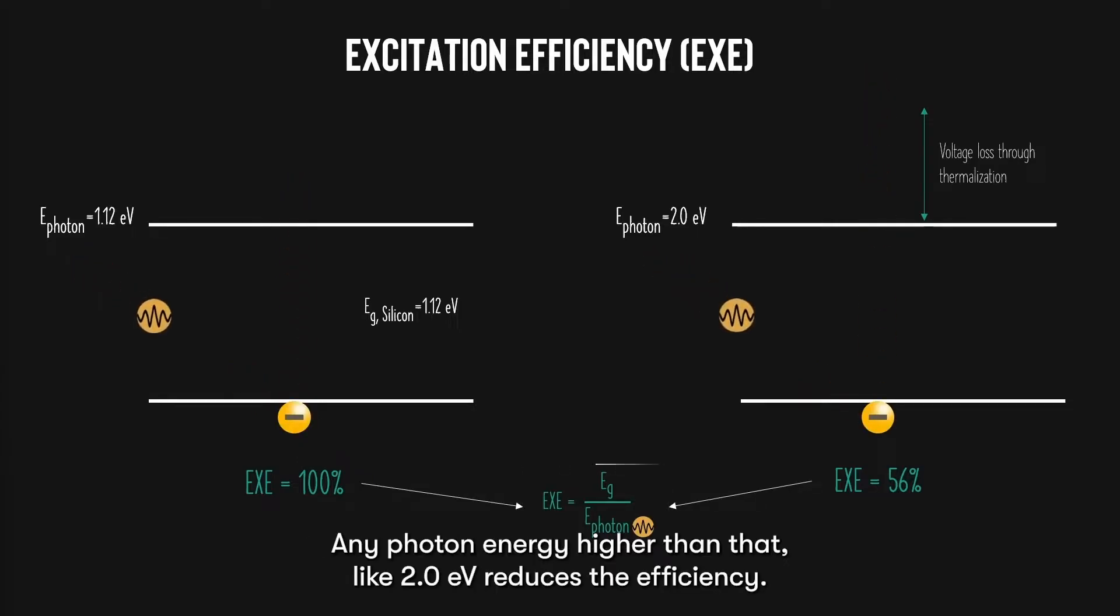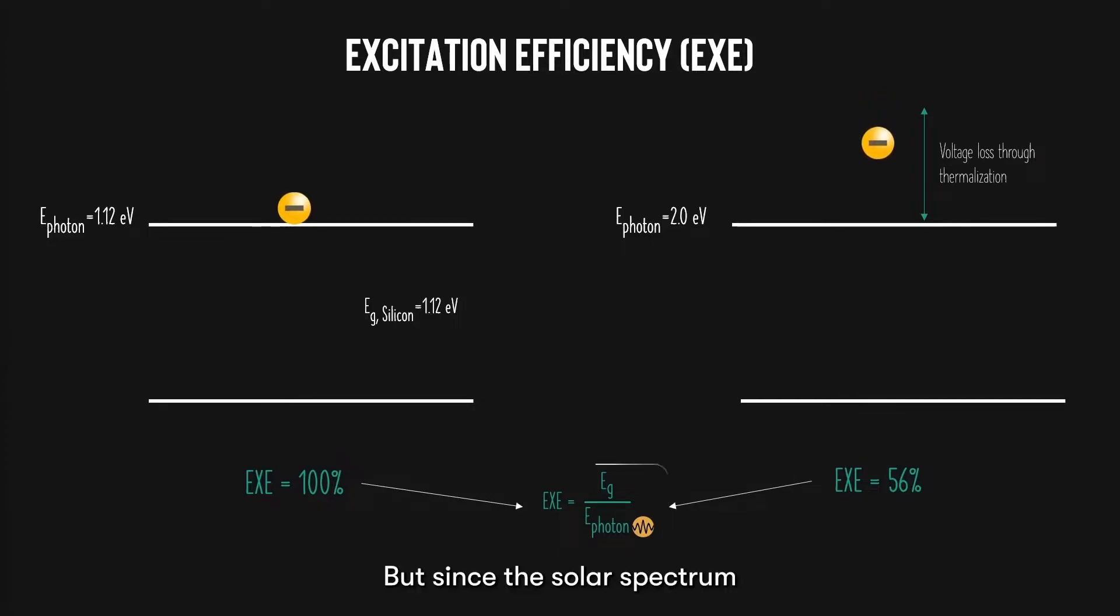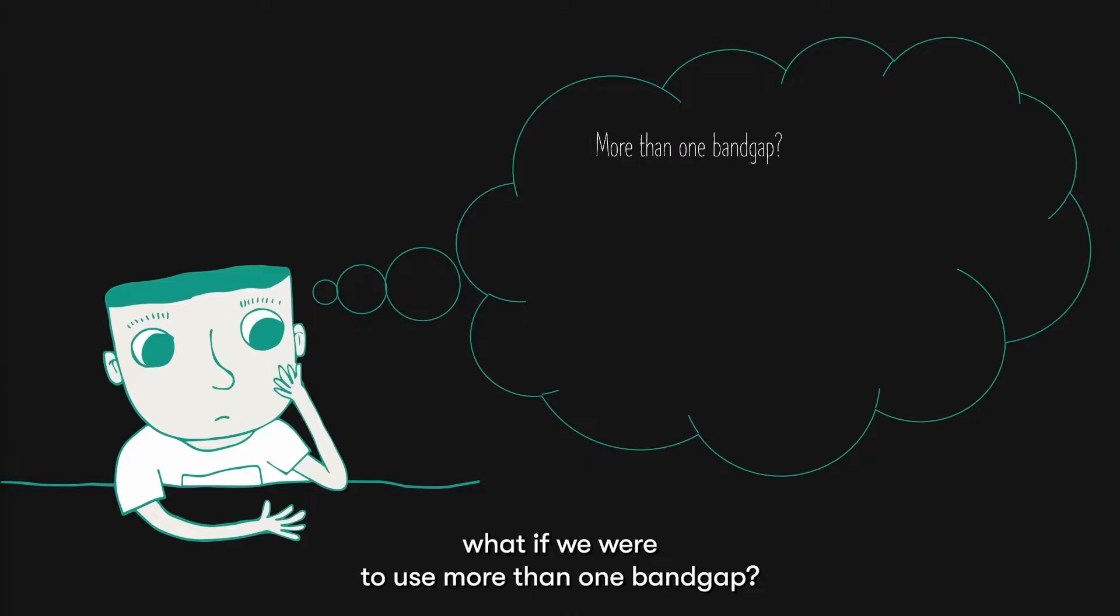Any photon energy higher than that, like 2 electron volts, reduces the efficiency. But since the solar spectrum comes in a wide range of photon energies, we can't have a single band gap that fulfills all photon energies. So the idea is, what if we were to use more than one band gap?